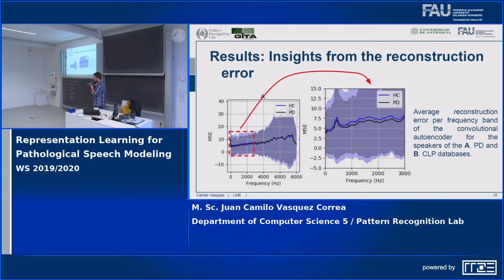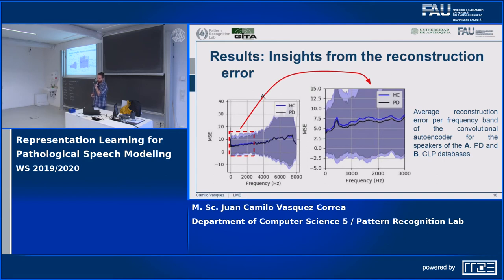For Parkinson's disease, the reconstruction error is higher for healthy controls than for Parkinson's patients, especially in the area below 3000 Hz. This effect could be explained by monotonicity and monoloudness, which make patients produce speech with less variability than healthy people. These aspects make Parkinsonian speech easier to reconstruct than healthy speech.